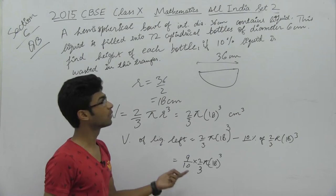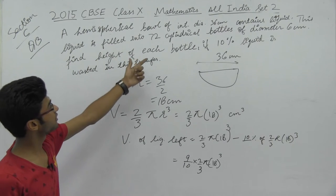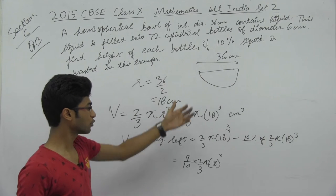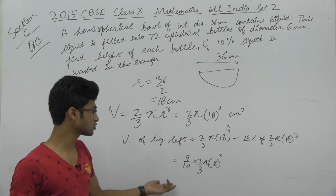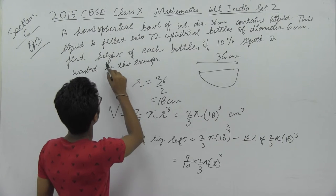This volume is filled into 72 bottles. We divide the total volume among the 72 bottles, but we need to find the height of each bottle.